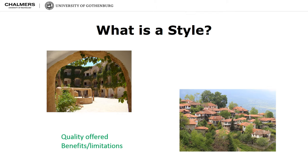The first style is mainly used in the desert. It allows the house to stay cool and protected from sandy winds. However, this style performs poorly in the case of heavy rain. The other style is used mainly in mountainous areas, protecting the house from cold weather and snowfalls. However, the style might be less practical in case of extreme heat.